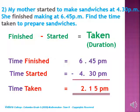Now read this question with the teacher. My mother started to make sandwiches at 4:30 p.m. She finished making at 6:45 p.m. Find the time taken to prepare sandwiches. You have the important words: started, finished, and taken. We subtract the started time from the finished time to find the time duration. Time finished: 6:45 p.m. Time started: 4:30 p.m. Time taken: 2 hours 15 minutes.